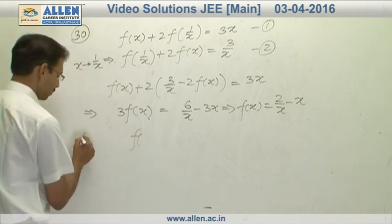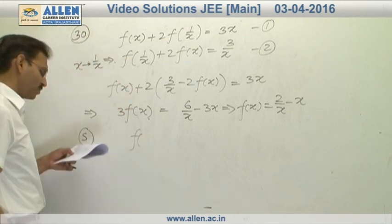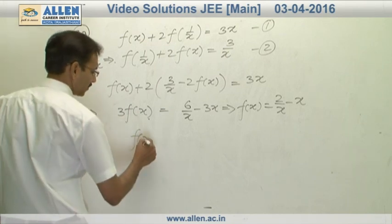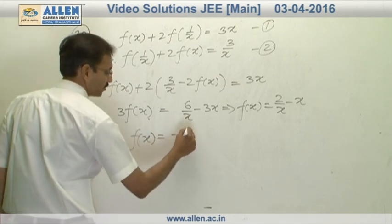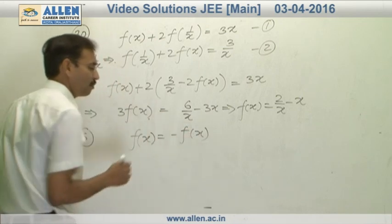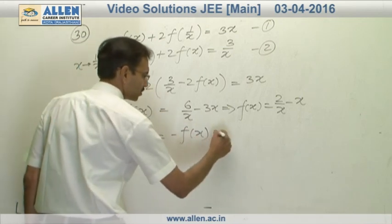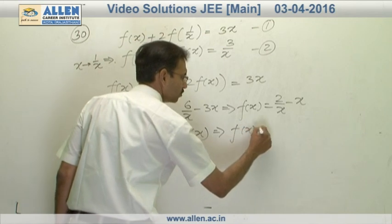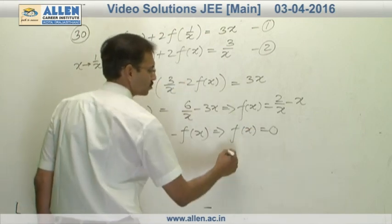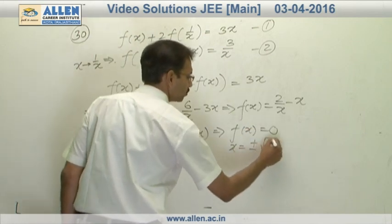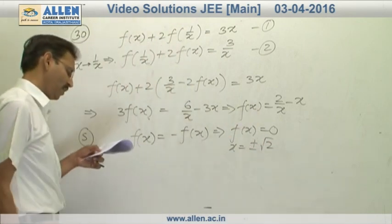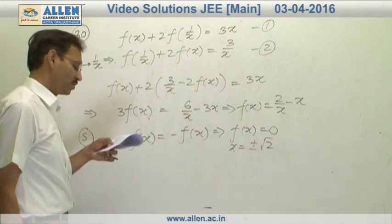So for s, because they are calling it s. So for s, f of x equals to f of minus x and I am writing f of minus x minus f of x. So the solution of this equation represents the solution of f of x equals to 0. f of x equals to 0 gives us x equals to plus minus root 2. So there are two distinct values of x. So the right option is 4.